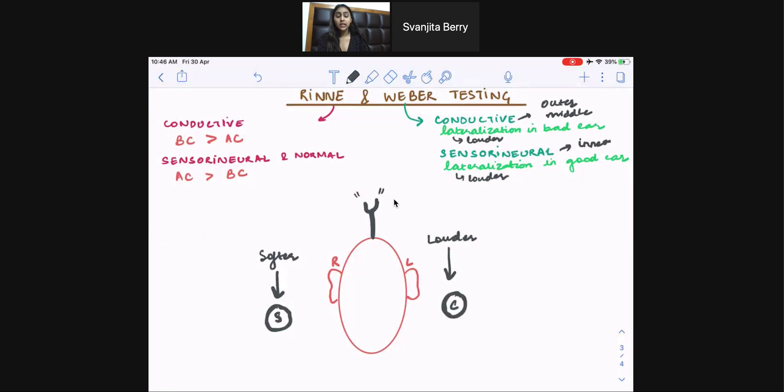Now, how do we do the Rinne test? We take a tuning fork, and we start by placing it on the mastoid process of our patient. And we ask the patient to let us know when they stop hearing the tuning fork. Now, this time represents the bone conduction time.